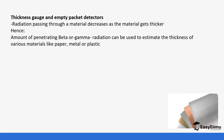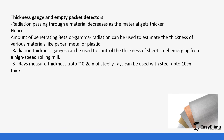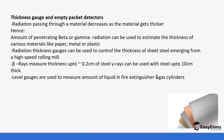Radioactivity is also used to gauge the thickness of materials. Radiation passing through a material decreases as the material gets thicker. Recall that alpha, beta, and gamma emissions are stopped by different materials — alpha is stopped by paper, beta particles are stopped by an aluminium block, and gamma rays are stopped by lead.